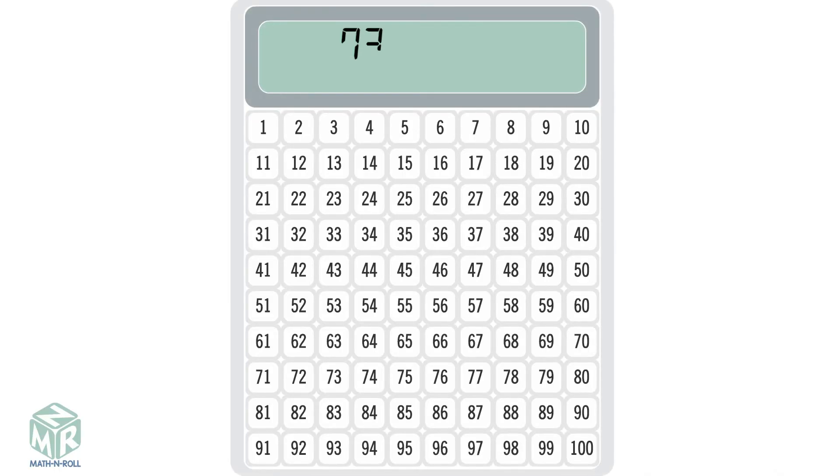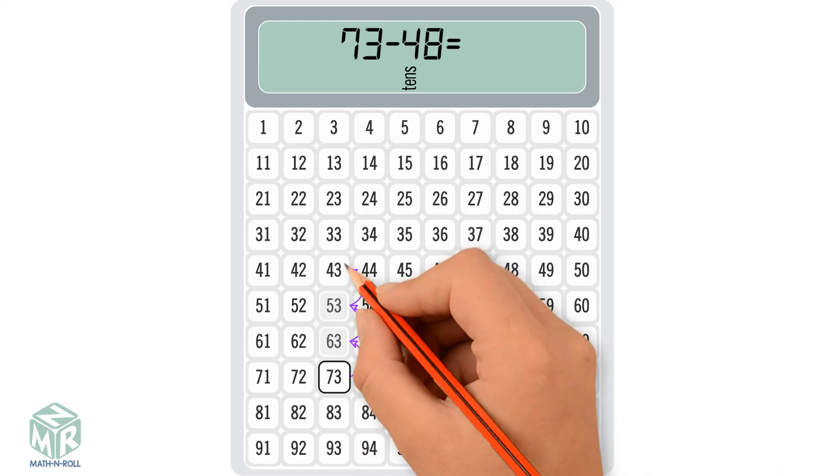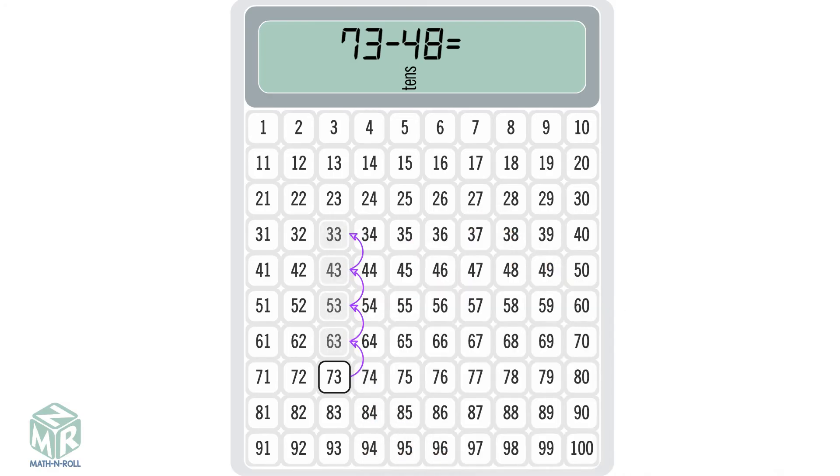Let's try another one. 73 minus 48. 48 has 4 tens. Start at 73 and move up, or subtract 4 tens. We pause at 33.